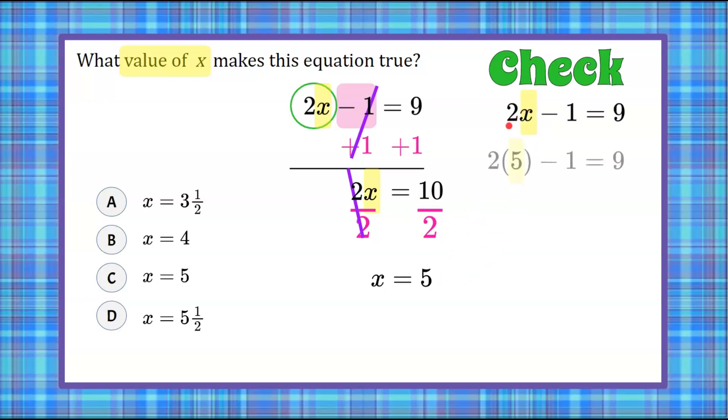Remember this is 2 multiplied by 5. Subtract 1 must equal 9 if this is true. 2 multiplied by 5 has a product of 10. 10 subtract 1 is 9 and 9 indeed equals 9. It checks. So I can now for sure state that answer choice C, x equals 5, is the value of x that makes this equation true.